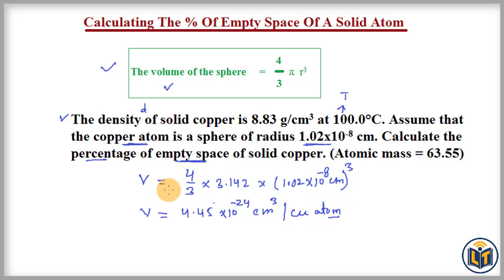Looking at the first part of the problem: the density of solid copper is 8.83 gram per centimeter cube, meaning that in one centimeter cube volume, 8.83 grams of copper atoms are present. From this data, we can calculate the number of atoms present in one centimeter cube of the substance by converting mass to moles and moles to atoms.